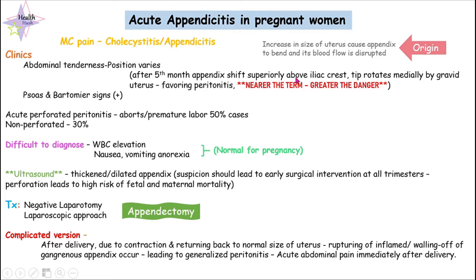Therefore, near the term — the greater the size of the uterus, the greater the danger. In these patients, we can also have positive Psoas and Obturator signs.